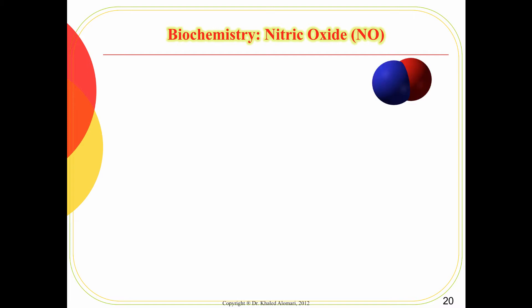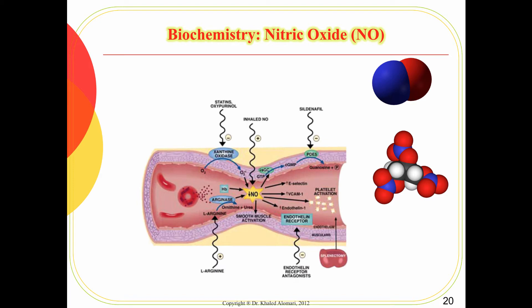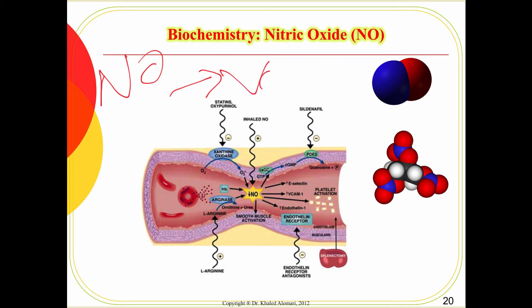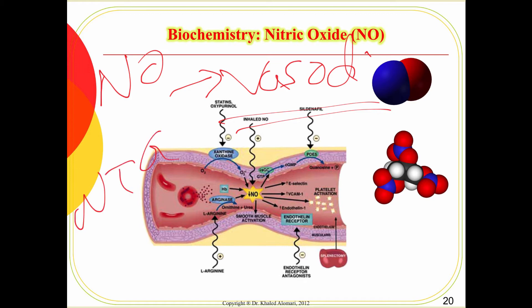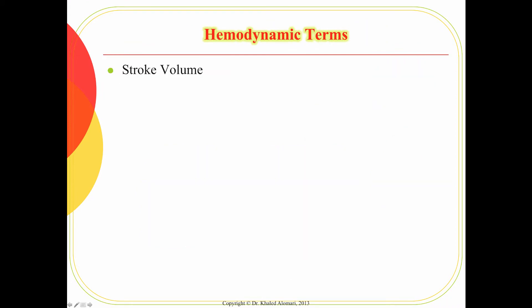Nitric oxide is a molecule naturally available in the bloodstream, within the smooth muscle cells that control vasoconstriction and vasodilation. The major effect of nitric oxide is vasodilation. When there is a spasm or a clot and vasodilation is needed, smooth muscle cells release nitric oxide. In fact, nitroglycerin is essentially nitric oxide. When natural nitric oxide is insufficient, we can administer it externally to induce vasodilation in cases of severe vasoconstriction or coronary occlusion.